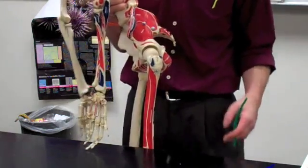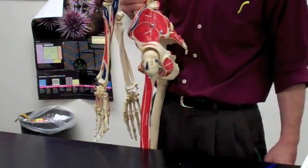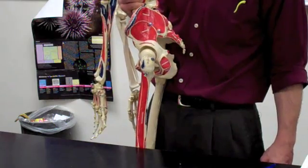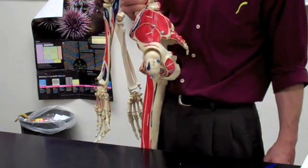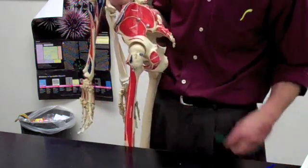The lateral rotator group includes the piriformis muscle, the obturator internus, the gemellus superior and inferior, obturator externus, and the quadratus femoris. Let's get started.